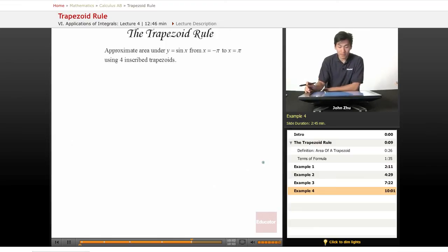Now looking at y equals sine of x from x equals negative pi to x equals pi. So let's draw that. Well, first of all, we're using four trapezoids. So let's draw this and label in our four trapezoids.